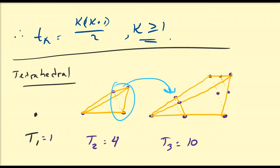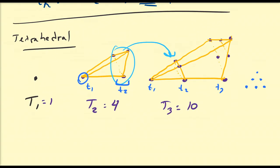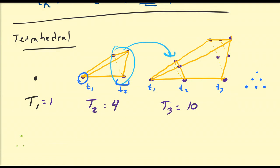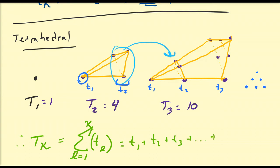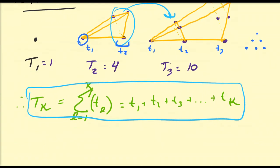Notice that this drawing contains the first triangular structure, and this piece is the second triangular structure. So this is t1, t2, and this face is t3 — three base points, two points there, one point there. Therefore, the kth tetrahedral number is the sum of triangular numbers: the sum from L equals 1 to k of tL, which is t1 plus t2 plus t3, all the way up to tk.